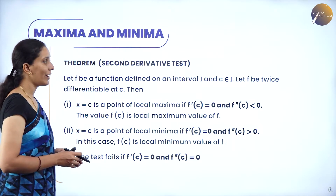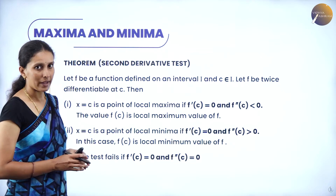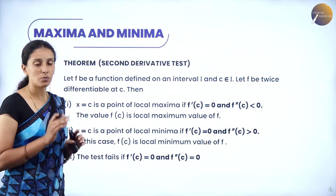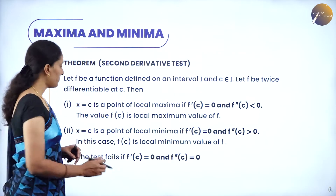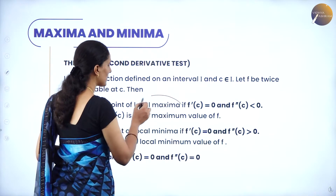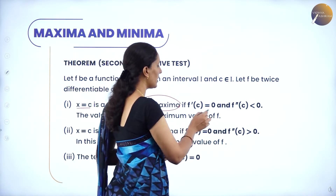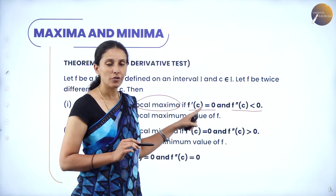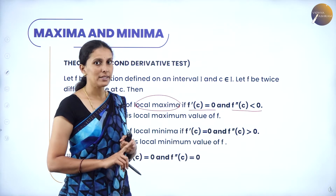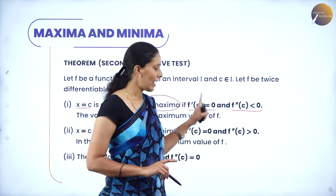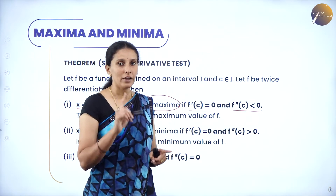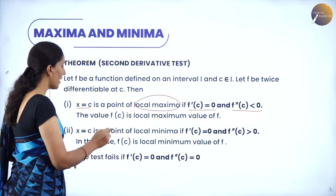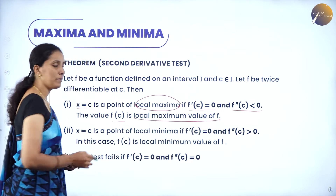Let f be a function defined on the interval I and c belongs to I. Let c be some critical point belonging to I, and let f be twice differentiable at c — it has to be derived twice at the point c. Then x = c is a point of local maxima if f'(c) = 0 and f''(c) < 0, that means negative. When you substitute f'(c) = 0 you get the critical points, and if the second derivative at that point is negative, we say the point is local maxima and f(c) is called the local maximum value.